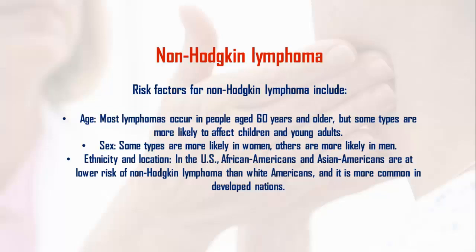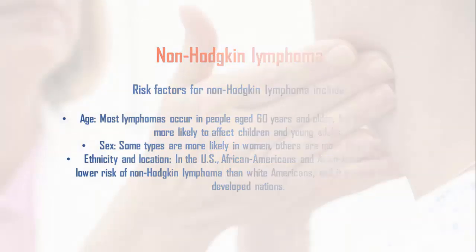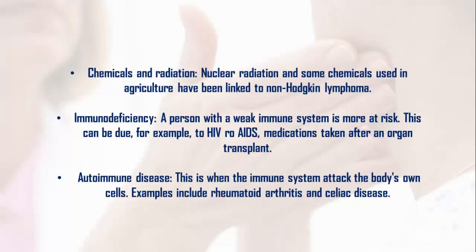3. Ethnicity and location: in the U.S., African Americans and Asian Americans are at lower risk of non-Hodgkin lymphoma than white Americans, and it is more common in developed nations. 4. Chemicals and radiation: nuclear radiation and some chemicals used in agriculture have been linked to non-Hodgkin lymphoma.